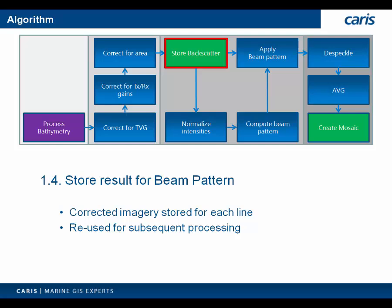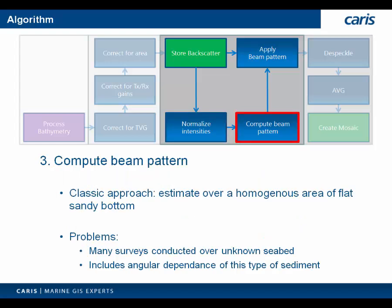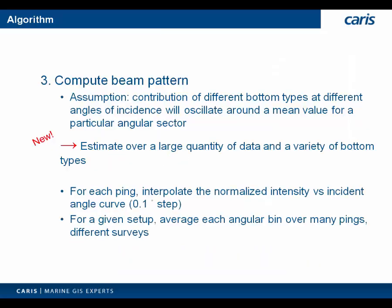Now that we have a corrected image, we can compute our beam pattern. First, we normalize the intensities by projecting the ensonified area to a plane perpendicular to the beam vector and by the total power in the ping — this accounts for small power gain fluctuations in certain sonars. We compute the beam pattern from that normalized intensity. A classic approach would be to extract the beam pattern from a homogenous area of flat bottom, but in practice many surveys are conducted over an unknown bottom type and the resulting beam pattern will inevitably have some angular dependence. So Sips backscatter instead uses the entire dataset, with the assumption that contributions of different bottom types oscillate around a mean value. We generate the beam pattern in tenth-of-a-degree increments over the swath, then average these angular bins over many pings.